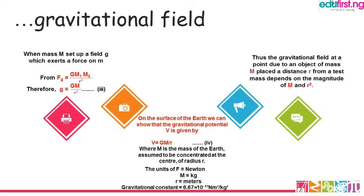The units of F (force) are Newtons. M is in kilograms, R is in meters — so if given in centimeters, make sure you convert to meters. The gravitational constant G is 6.67 times 10 to the power of negative 11 Newton meters squared per kilogram squared.